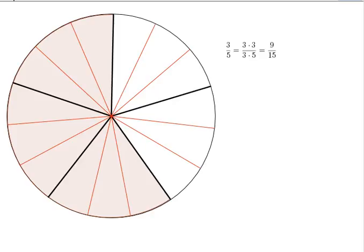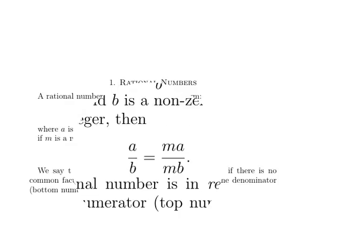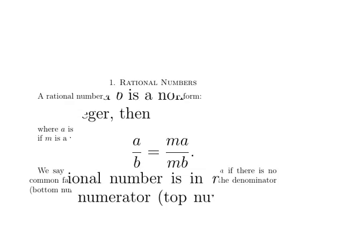Let's use the language of algebra to discuss this in more general terms. We say that a rational number is any number that can be written in the form A over B, where A is an integer and B is a non-zero integer. Then if M is a non-zero integer, then A over B is equivalent to M times A over M times B.